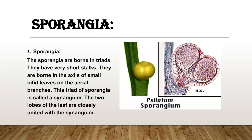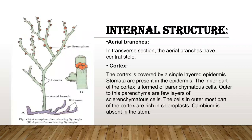The sporangium is a compartment or box where spores are produced. Sporangia are borne in triads; they have very short stalks and are borne in the axil of small bifid leaves on the aerial branches. These triads of sporangia are called a synangium. The two lobes of the leaf are closely united with the synangium.